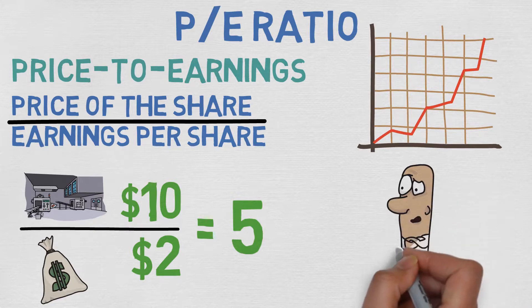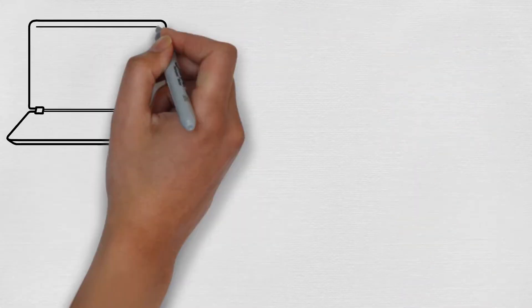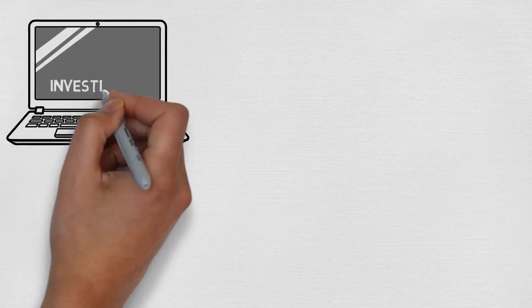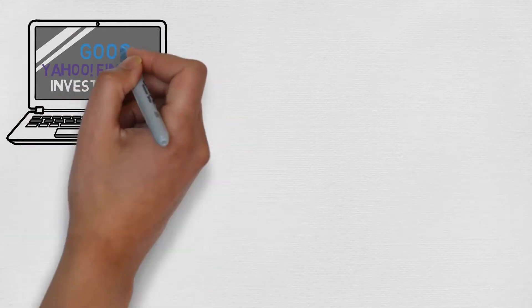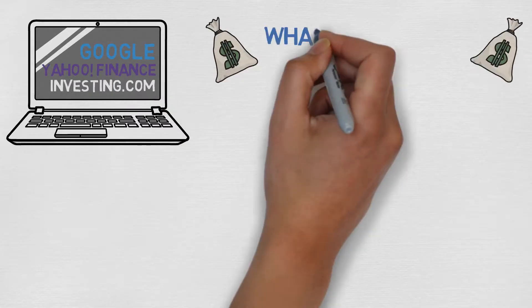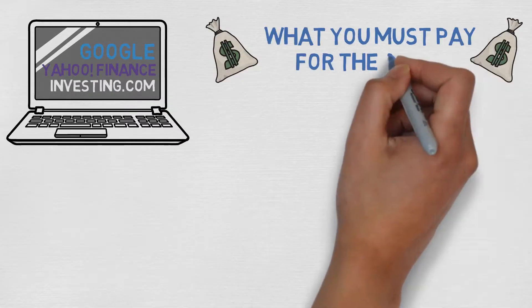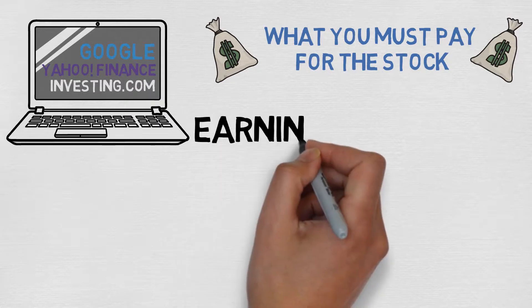But how can you know these numbers? The current stock price can be easily found from different websites like investing.com, Yahoo Finance, Google, or whichever site you prefer to use. This price shows you what you must pay for the stock at the moment, but the earnings per share is a little more complicated.